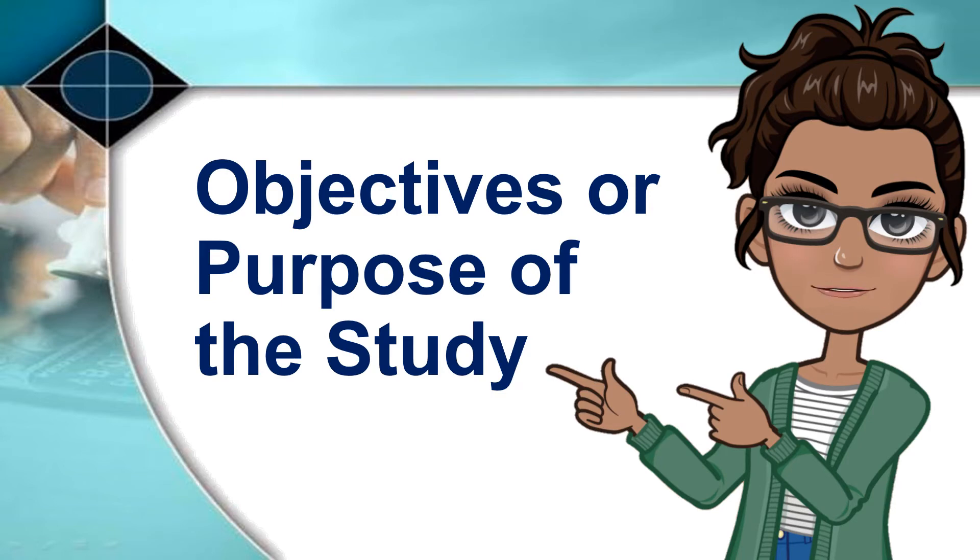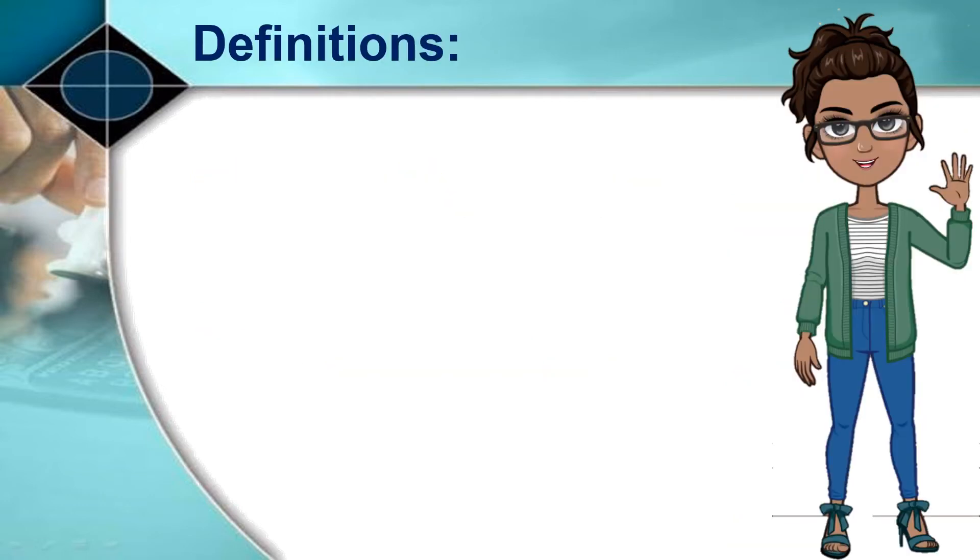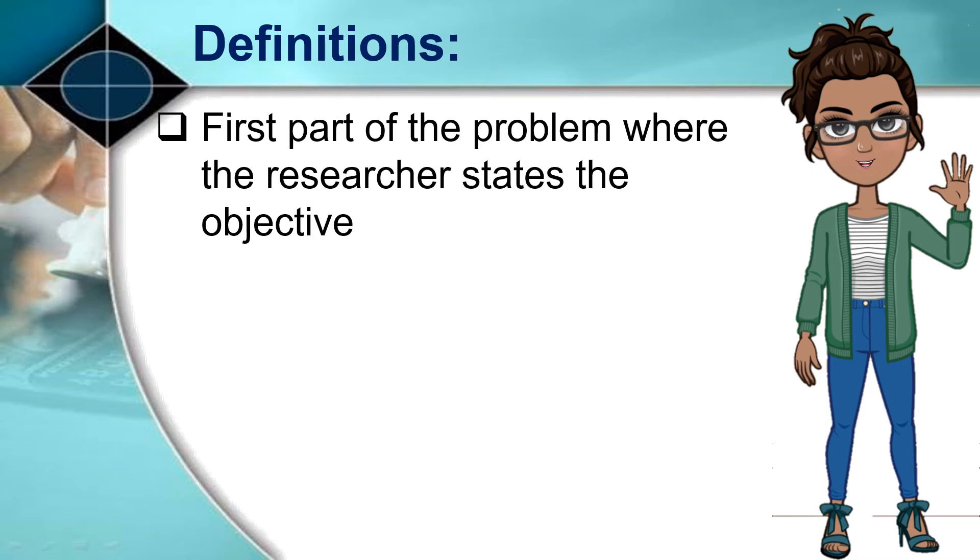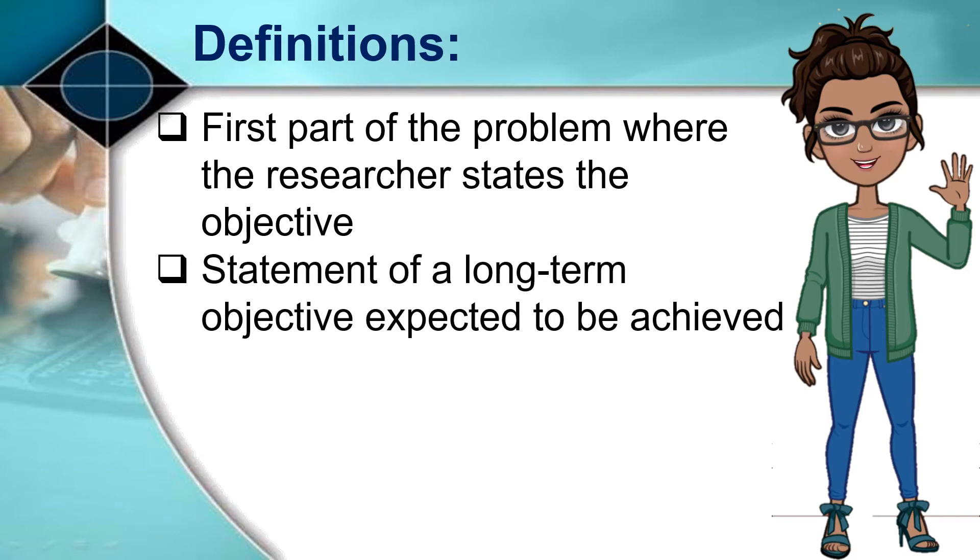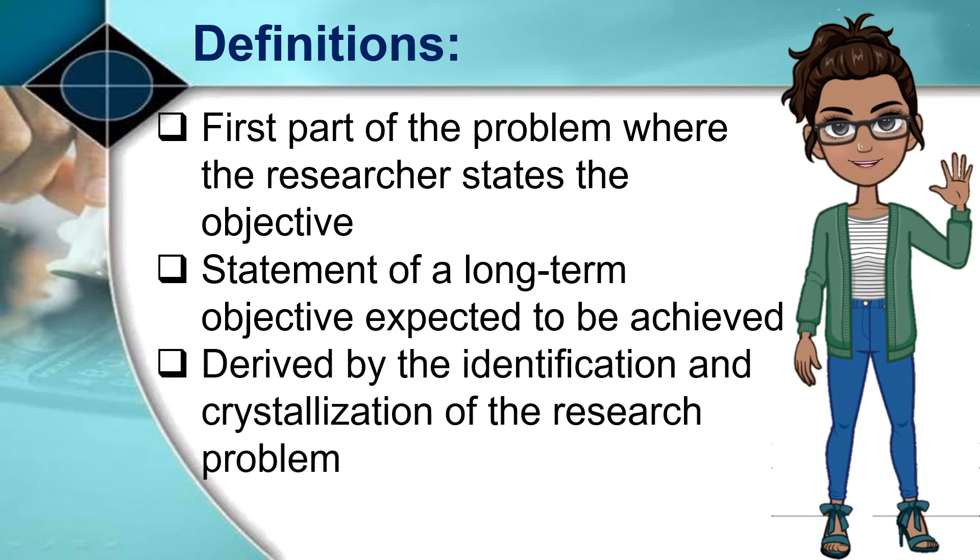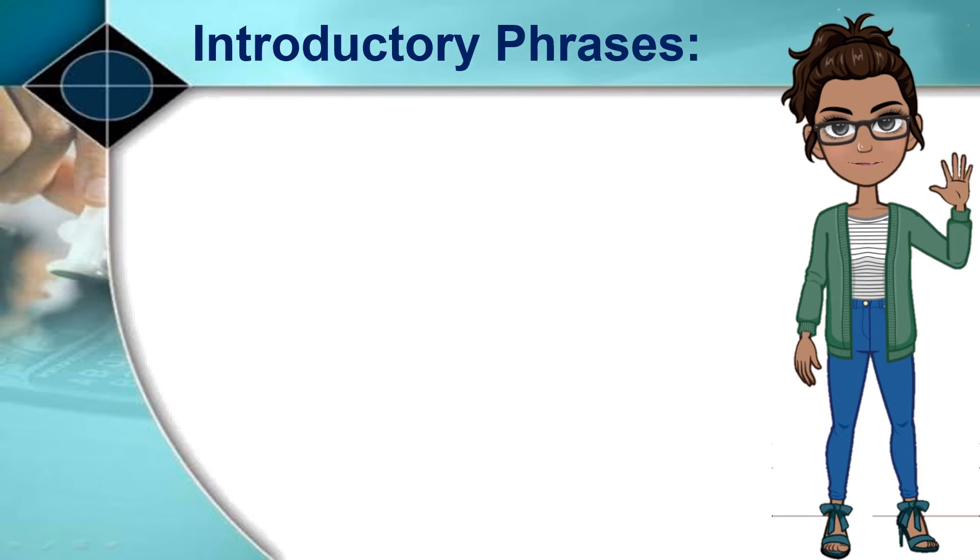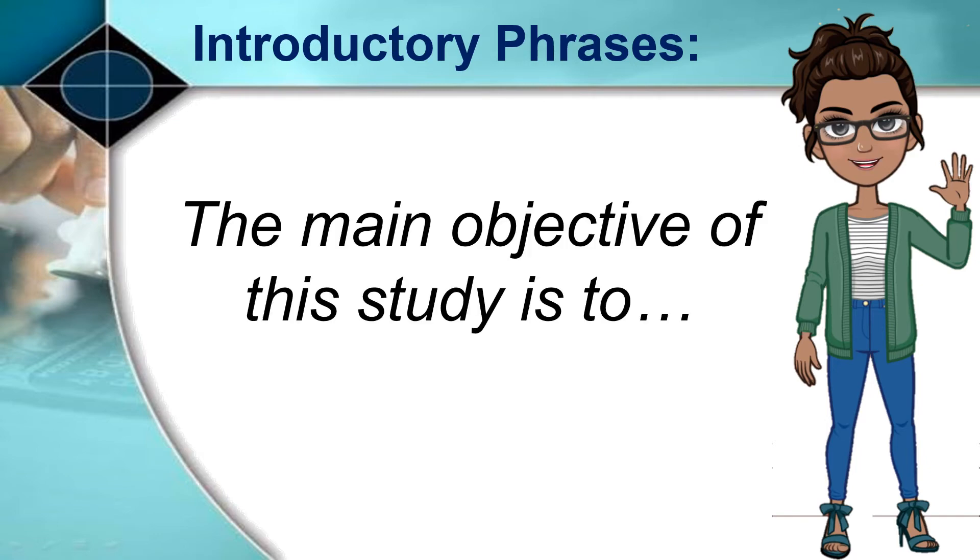The objective or purpose of the study is the first part of the problem where the researcher states the objective. This is a statement of a long-term objective expected to be achieved by the study. This is derived by the identification and crystallization of the research problem and as reflected in the title. It is prefixed by this introductory phrase, example: the main objective of this study is to...